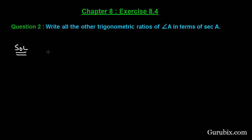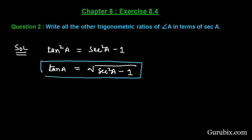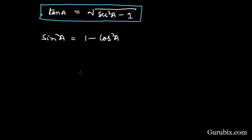We know that tan²A = sec²A - 1, therefore tan A = √(sec²A - 1). This is how we can write tan A in terms of sec A.